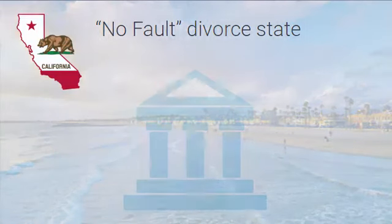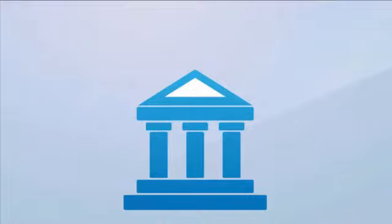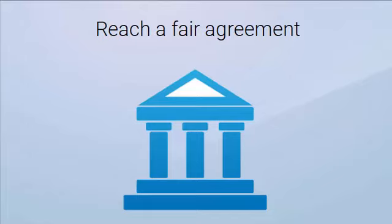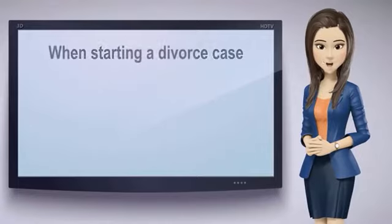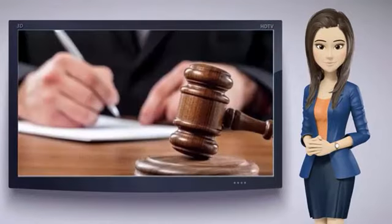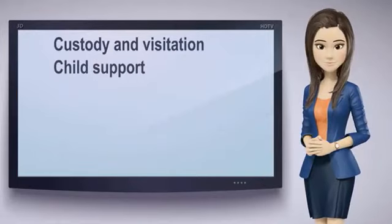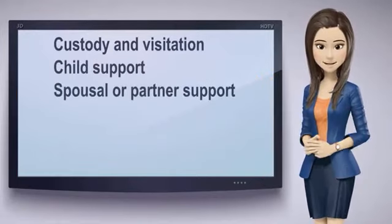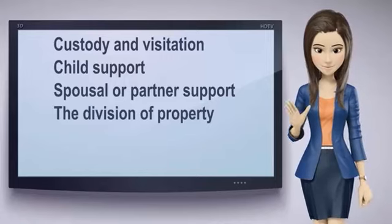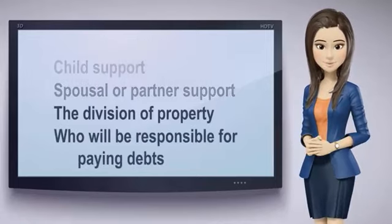The only thing the court is interested in is helping the separated spouses or partners reach a fair agreement about how their life will be restructured after the divorce so they can go ahead and rebuild their lives. When you start a divorce, you can ask the judge to make orders about custody and visitation, child support, spousal or partner support, the division of your property, and who will be responsible for paying debts.